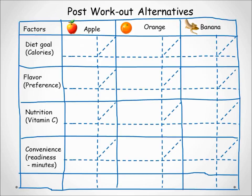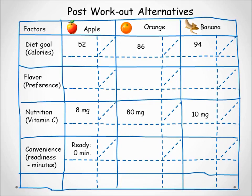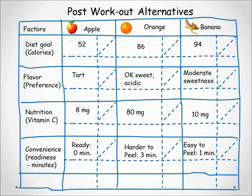Next we list the attributes under each factor with the criteria it supports, then identify the attributes of each alternative. An apple has 52 calories as its attribute for diet goal; an orange has 86 calories, and the banana is 94 calories. We repeat this for nutrition in milligrams of vitamin C, and then for convenience in minutes.